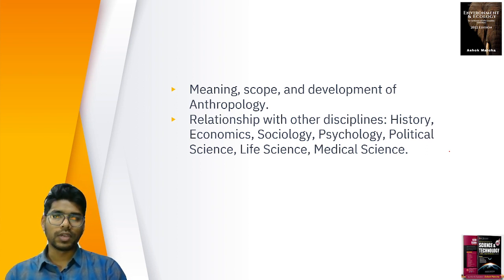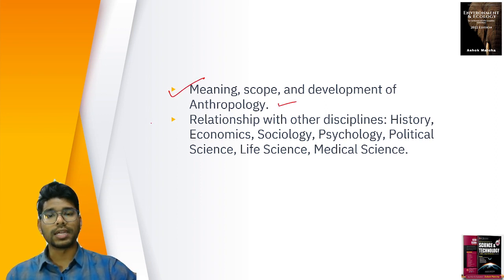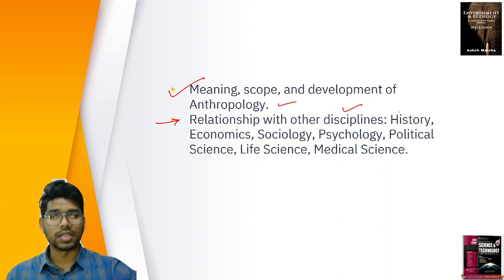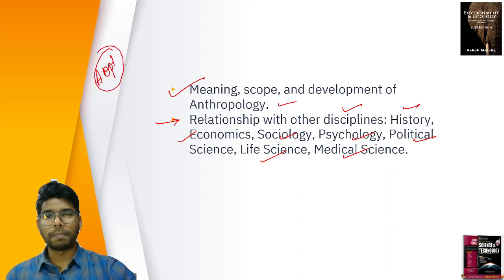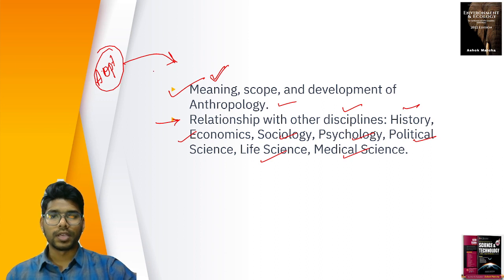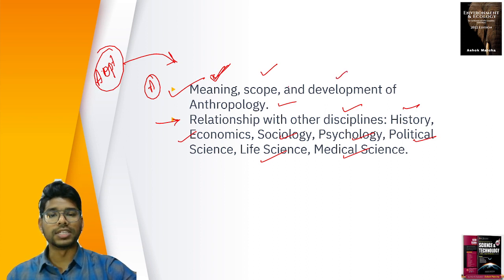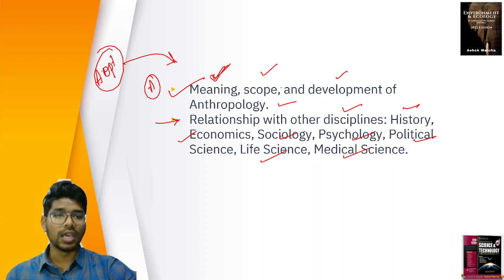The first part covers the meaning, scope and development of anthropology, and anthropology's relationship with other disciplines like history, economy, sociology, psychology, political sciences, life sciences and medical sciences. When it comes to anthropology optional, please stick to the syllabus — only the disciplines specified. The relationship is limited to these subject areas only; don't go for others.